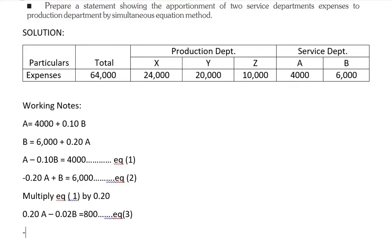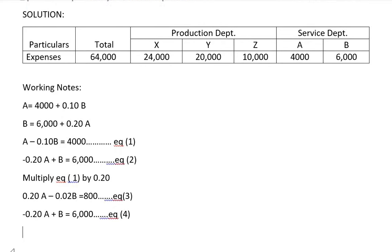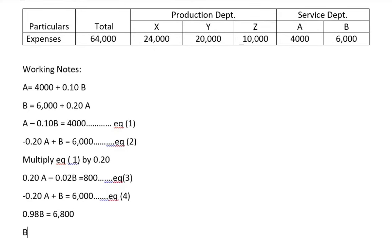We write equation 2 as it is: −0.20A + B = 6,000, calling it equation 4. Adding equations 3 and 4, the 0.20A terms cancel, giving 0.98B = 6,800. Therefore B = 6,800 ÷ 0.98, which equals 6,939.